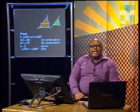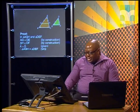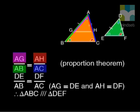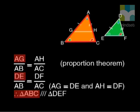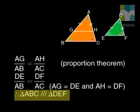Now, we can say that the sides of ABC are in proportion because of the proportion theorem. So, the ratio of AG to AB equals the ratio of AH to AC. Taking this back to triangle DEF, AG equals DE and AH equals DF. So, triangle ABC is proportional to triangle DEF. In other words, DE to AB equals DF to AC. And so, the triangles are similar.